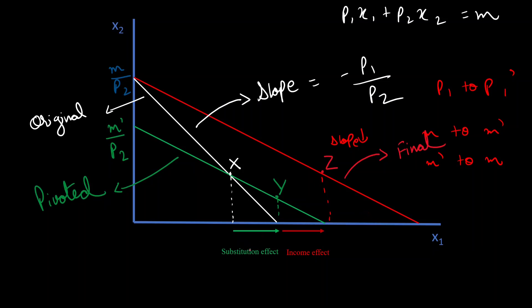Just to reiterate, we started off with our wide budget line. X was our original demand bundle. Then, we took some money away after the price change so that our original bundle was just affordable. And that's the reason why our pivoted budget line is passing through our original bundle. So, whenever you're drawing these graphs, make sure that that happens.